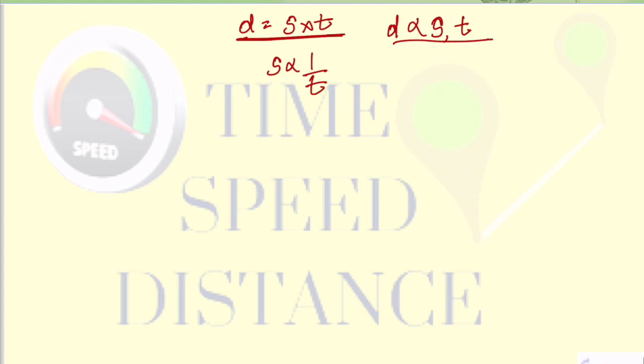Now if you have to convert speed from kilometer per hour to meter per second then you have to multiply it by 5 by 18.